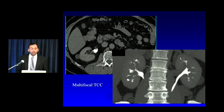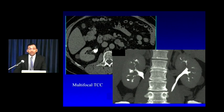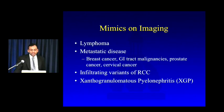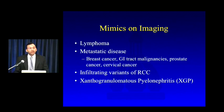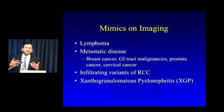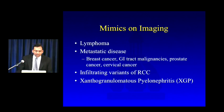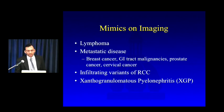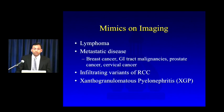Here's an example of extensive multifocal disease, with at least two nodules visible on a single axial slice within the renal pelvis, and on coronal MIP reconstructions from the excretory phase, extensive lesions throughout the right collecting system and possibly the left as well. Not everything that looks like TCC necessarily is — the most important mimic is probably lymphoma, which can look very similar as an ill-defined infiltrative mass but is typically associated with other stigmata of lymphoma such as lymphadenopathy. Metastatic disease and infiltrating variants of RCC can also mimic TCC, as can xanthogranulomatous pyelonephritis.